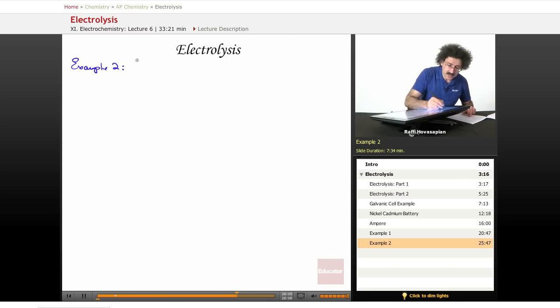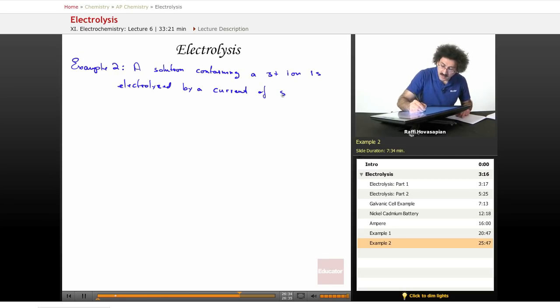A solution containing a 3-plus ion is electrolyzed by a current of 5.0 amps for 10 minutes. So now we're giving you the amperage and we're giving you the time.